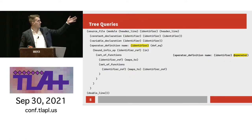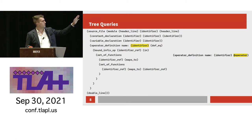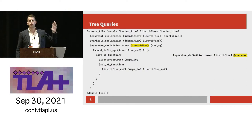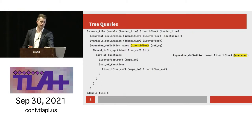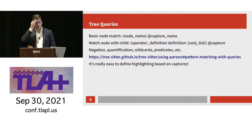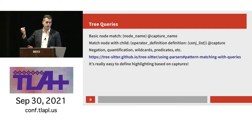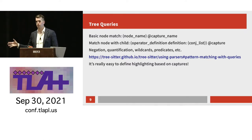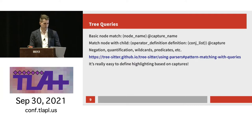This is what a tree query looks like. If we have our syntax tree and we wanted to get a query that returns the node that is the name of an operator, we write: operator_definition name identifier. Then this at-sign is a capture — it captures the identifier in this operator name, and that would refer to the highlighted thing. You can have a basic node match where you just put the name of the node and then the capture name. You can match nodes that only have children of a certain type. There's all sorts of extra stuff like negation, quantification, wildcards, predicates — it's like a whole query system.